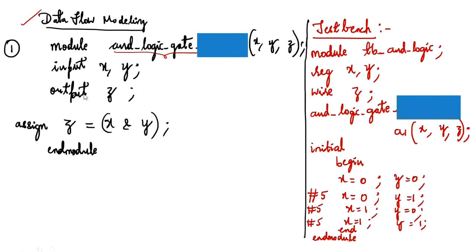In EDA tools there are two parts: the design and the test bench. In the design part, we write the module name with inputs and outputs. Inputs are X and Y, output is Z, and they are assigned to the Boolean expression using the assign keyword — write: assign Z = X & Y — then end the module.